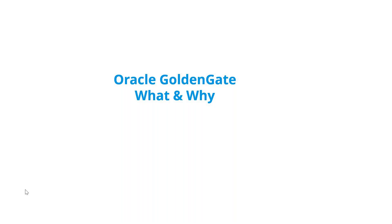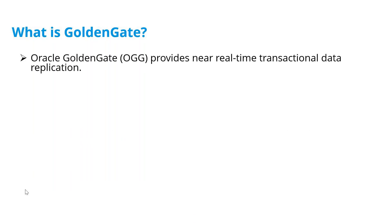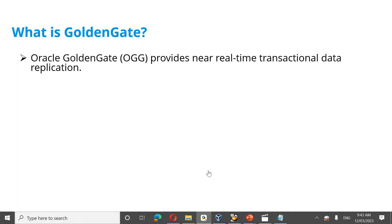Oracle GoldenGate is a near real-time transactional data replication tool. There are a lot of job openings related to Oracle GoldenGate — in fact, most DBA job openings now require GoldenGate as mandatory. GoldenGate is widely used for business intelligence, replication, lift and shift, data migration, and data transformation, so it has many benefits beyond one-to-one replication.